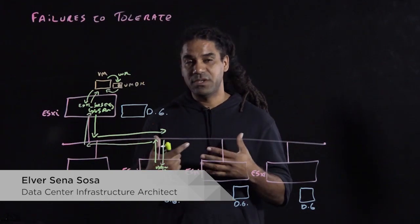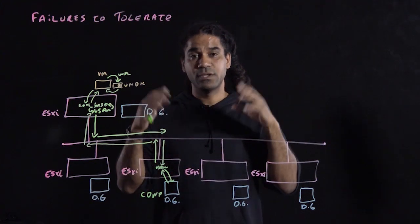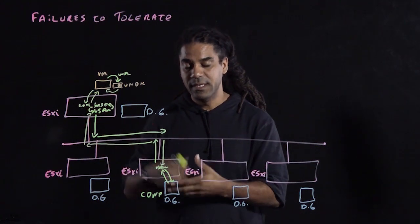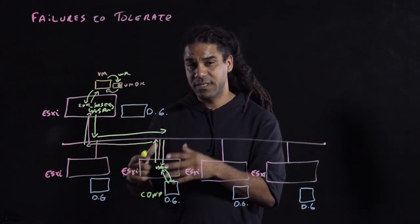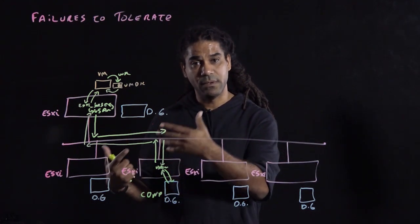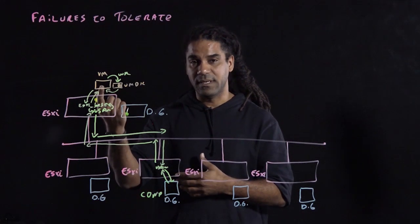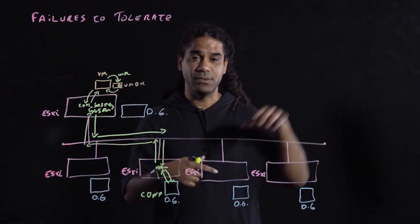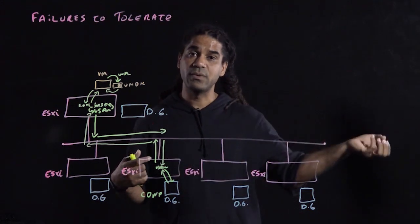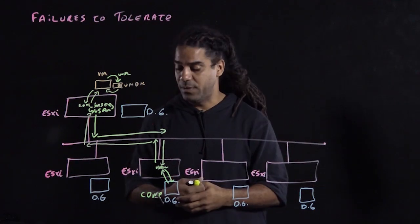In vSAN, there is a feature — one of those SPVMs that you can use — that allows you to provide storage redundancy to your VMs or your objects, so that in case of a physical component failure, whether it is the capacity device, the cache drive, a host, or a failure domain, the VM itself will continue to have access to that data, because there will be multiple copies of it, or a way to recover the data from the remaining hosts that are still running.